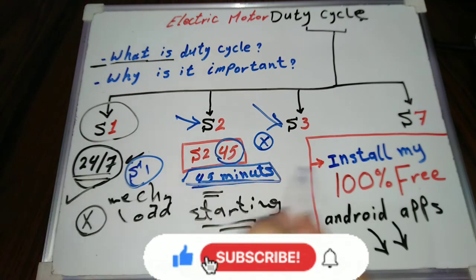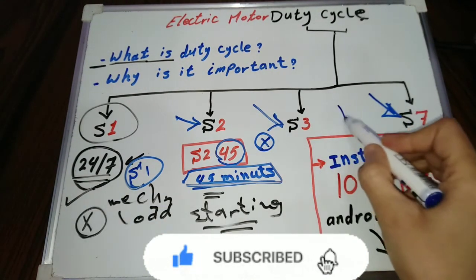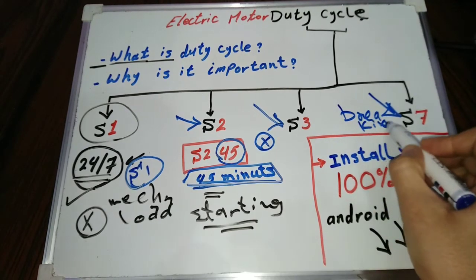Continuous duty with braking, S7, this load cycle is continuous, includes constant loads starting with braking. There is no rest time.